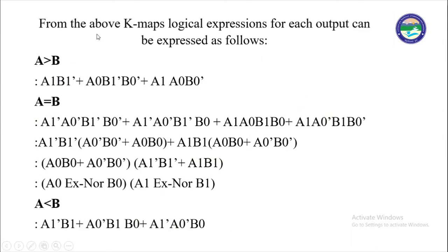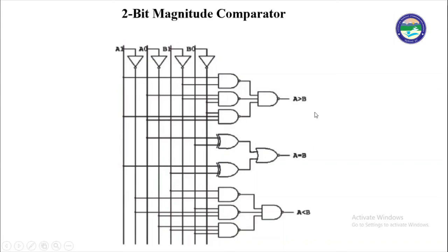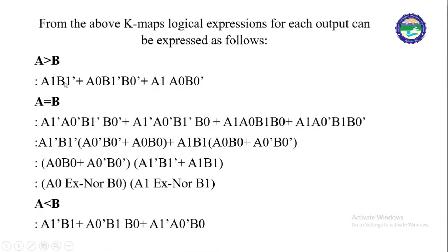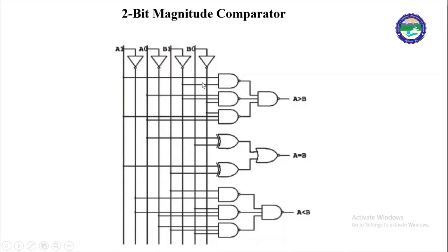By solving the Karnaugh maps, we write the Boolean expression for each output. The expression for A greater than B is written using the grouped terms, where the dash notation represents complement or bar. For A equal to B, this is the simplified output expression. For A less than B, this is the corresponding output expression. By using these logic expressions with AND gates, OR gates, and NOT gates — for example, A1·B̄1 combined with OR operations — we can construct a complete 2-bit magnitude comparator.